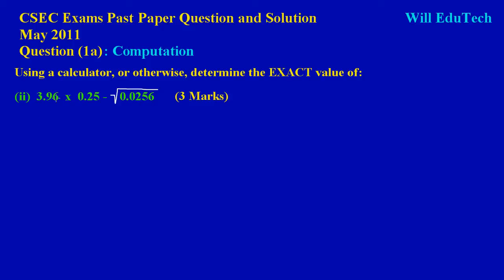Now, the question says: using a calculator or otherwise, determine the exact value of 3.96 times 0.25, and from that we are subtracting the square root of 0.0256. A question like this typically works three marks on the exam.